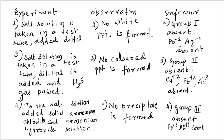Since zero group is absent, we proceed to group one. The group one reagent is dilute HCl added to the salt solution. No white precipitate is obtained, which means group one is absent. Group one cations Pb²⁺ and Ag⁺ are absent.